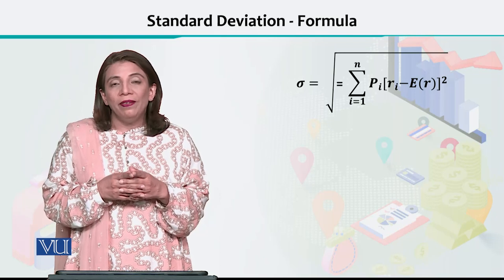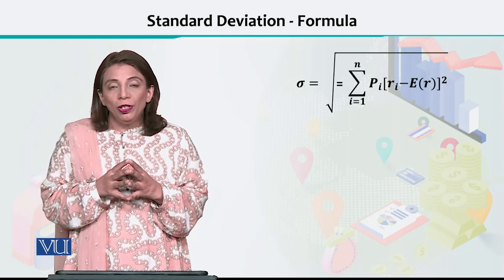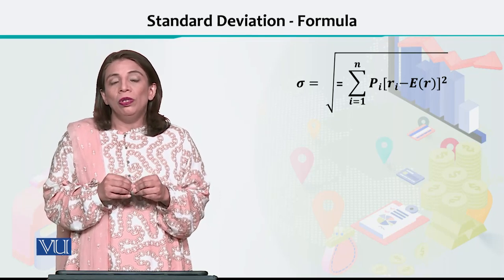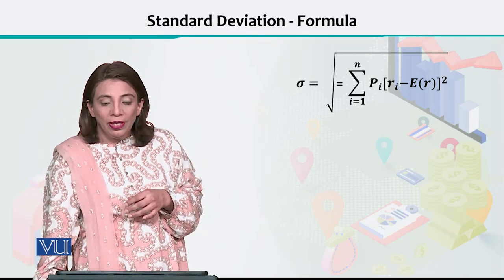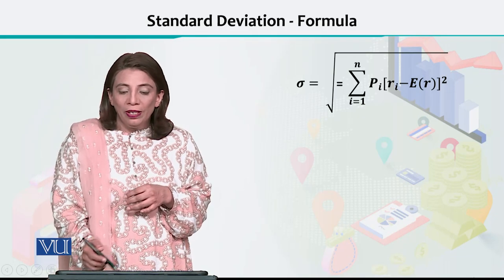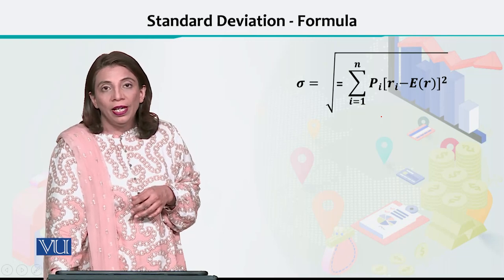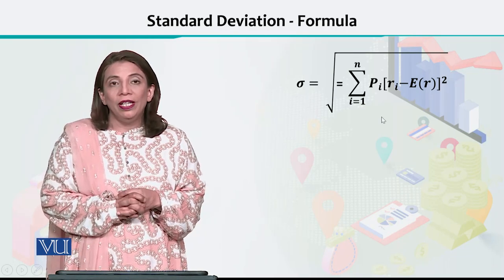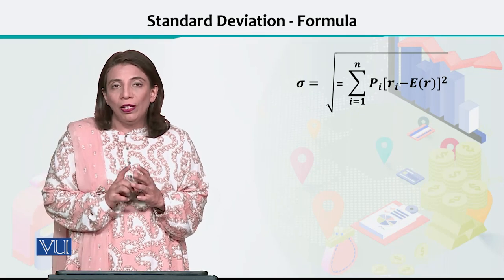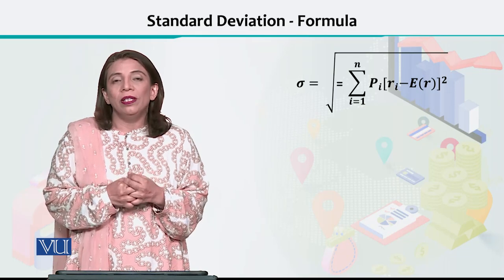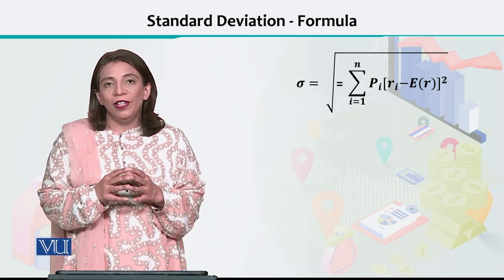Now the question becomes: how will we calculate standard deviation for expected returns? For that, we use the formula — we represent standard deviation with the sigma sign. I have used the formula where probability of return is multiplied by the rate of return value, represented as R-sub-i, where i means we are taking different values of rate of return. You cannot estimate the variation from one value, so you need to have multiple values — you need data on the expected rate of return.